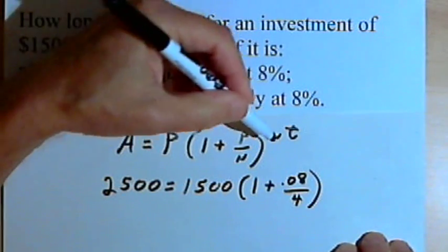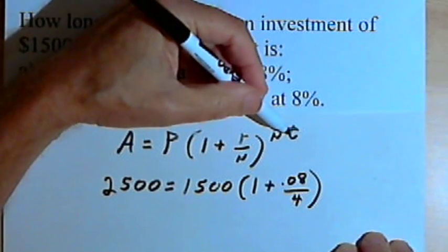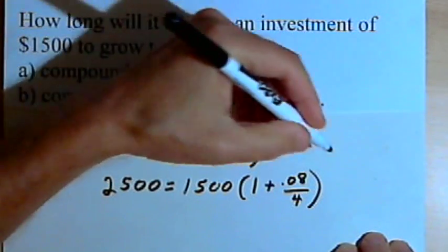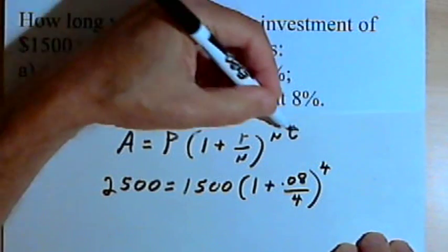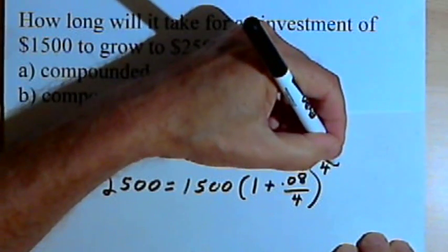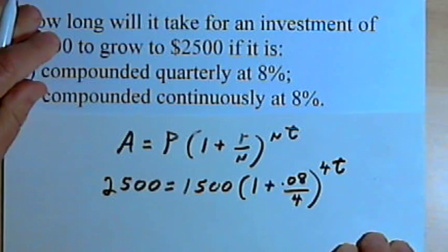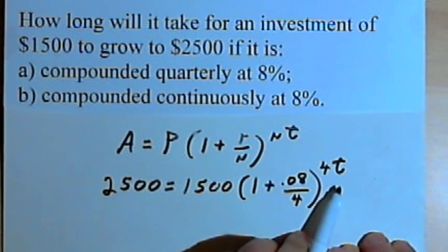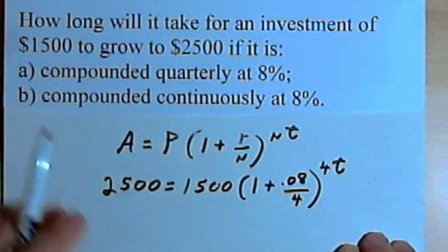And then we're raising that to the nt power. N, once again, is 4, the number of compounding periods, and t is what we're looking for. So now we're down to just one variable, the t. So we should be able to solve this.